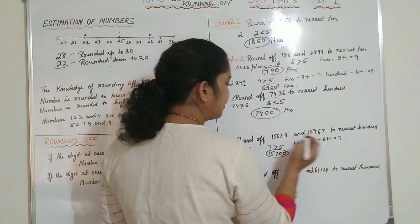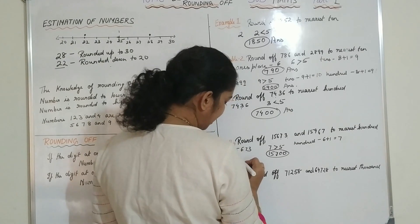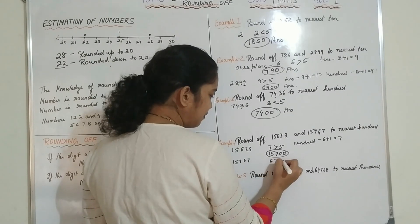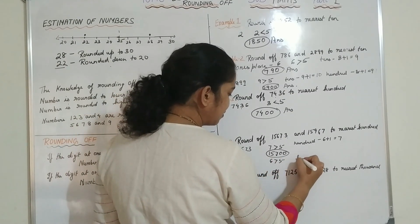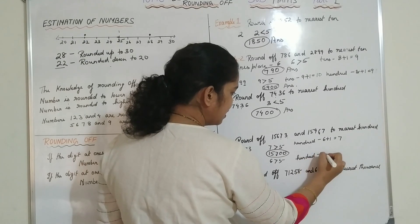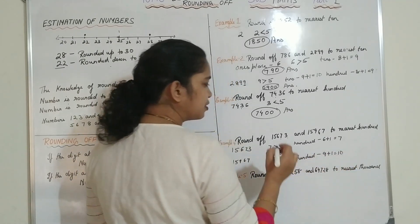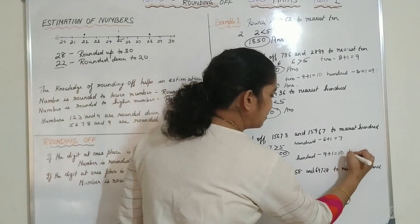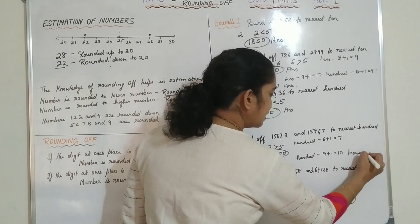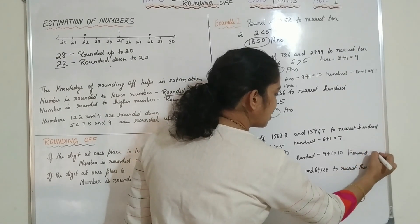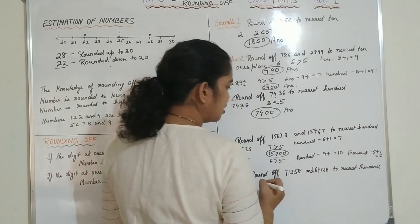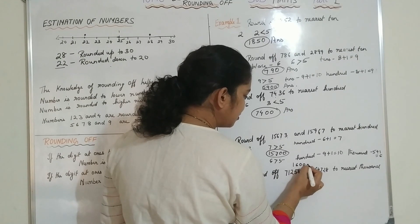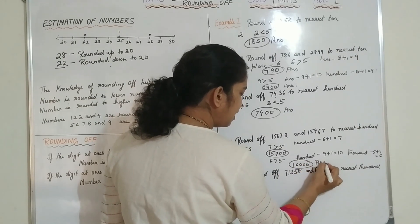Now the next number is 15967. Here also you can see the digit in the 10s place is 6, and 6 is greater than 5. So in the 100s place: 9 plus 1 equals 10. So 10 hundreds equals 1000, meaning in the 1000s place the number increases by 1 — 5 plus 1 equals 6. So the number rounded off will be 16000.